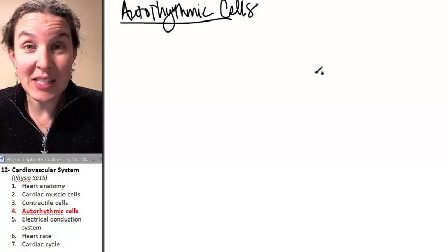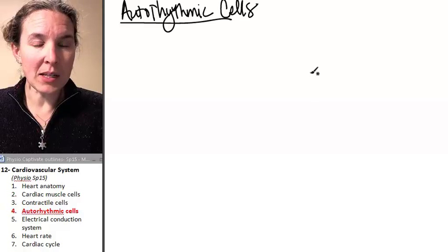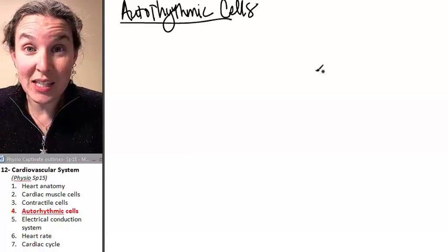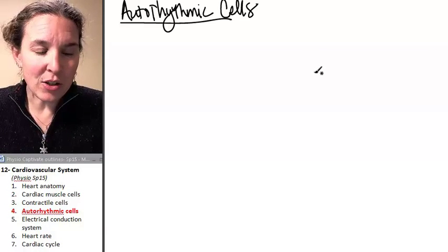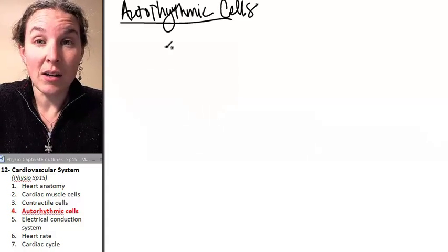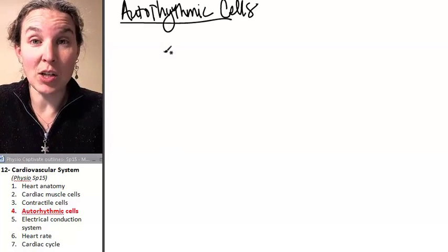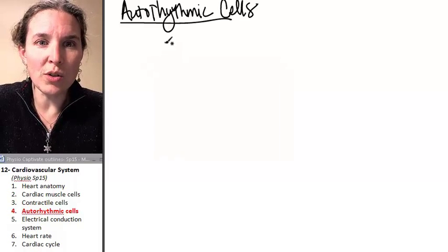We know that it didn't come from the nervous system because heart muscle can beat without nervous input. So it's not like the nervous system is dumping neurotransmitter on contractile cells and telling them to go. So who's doing the job?